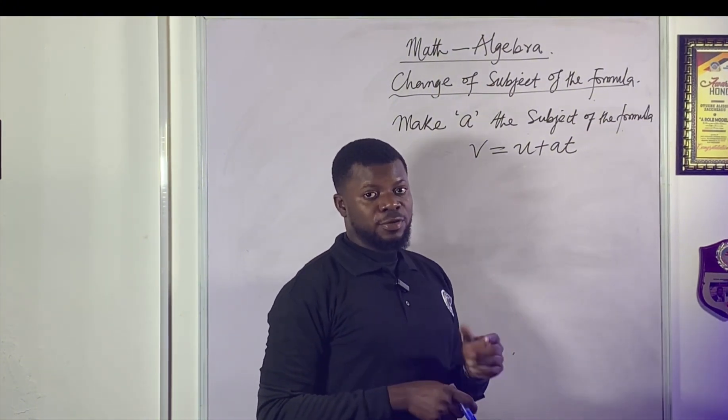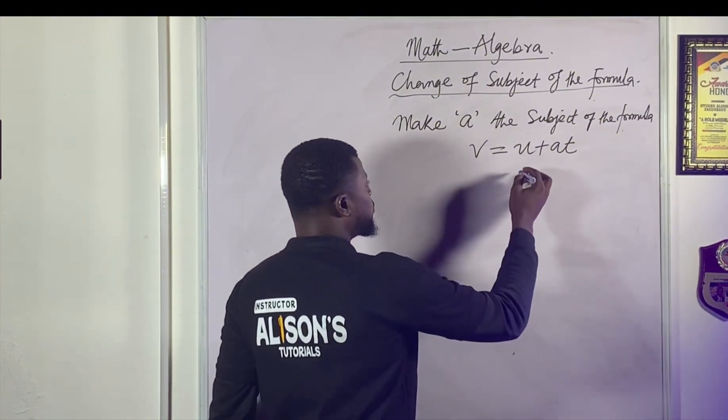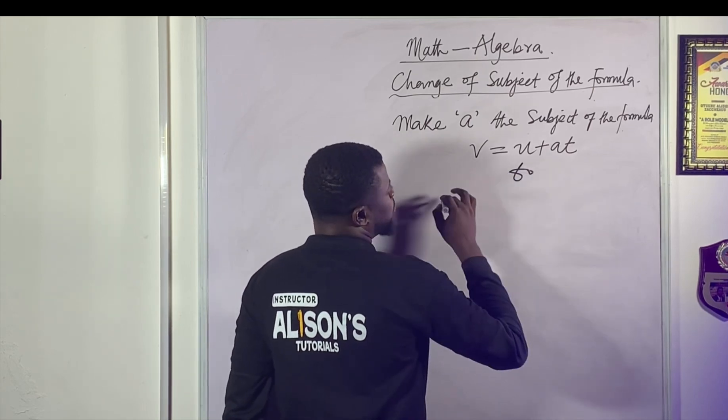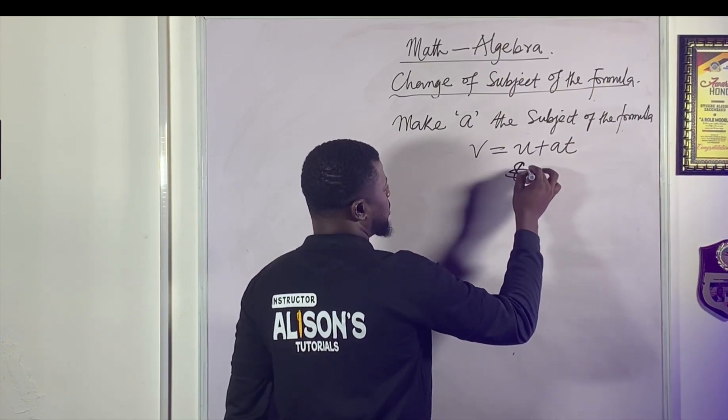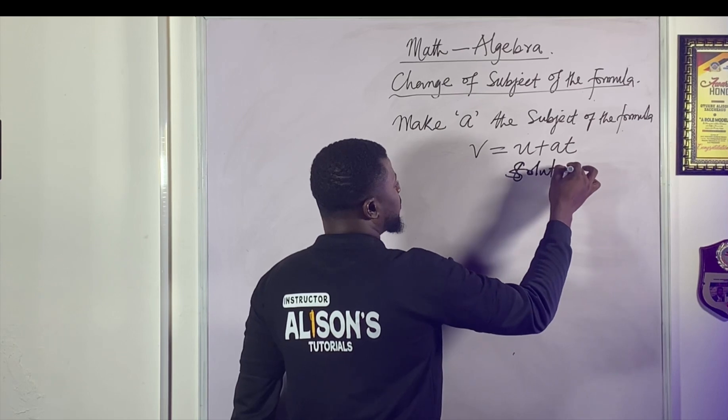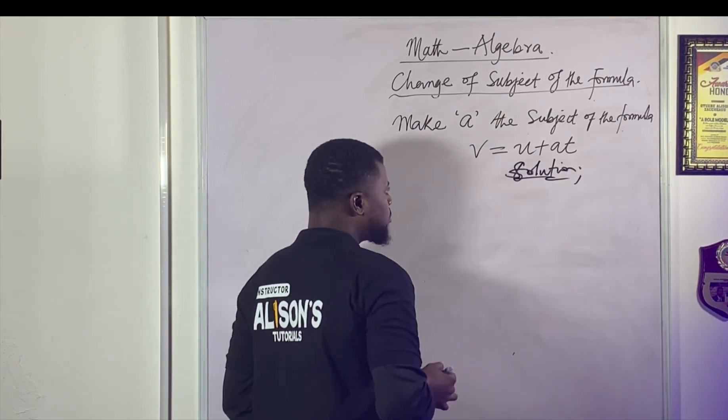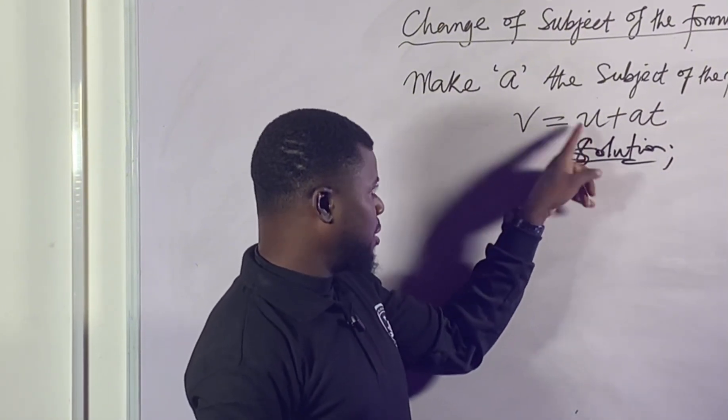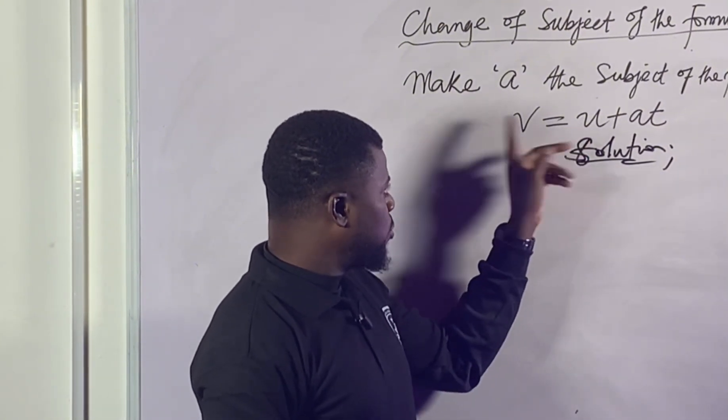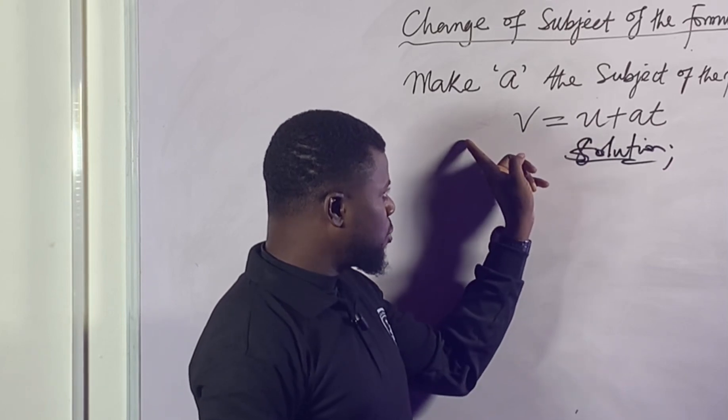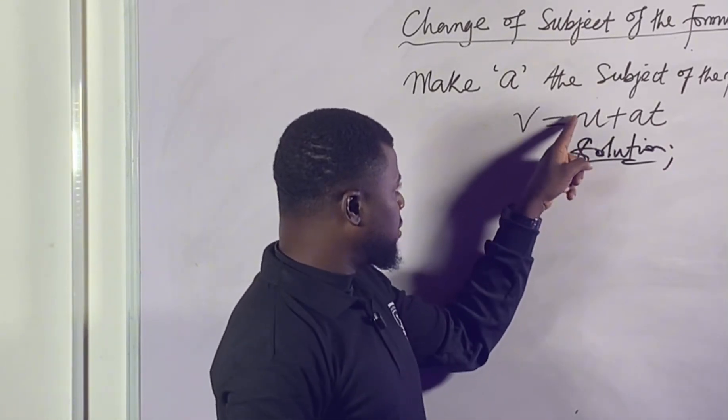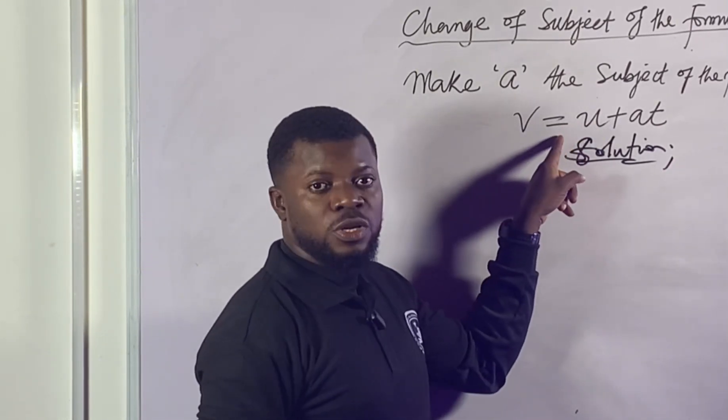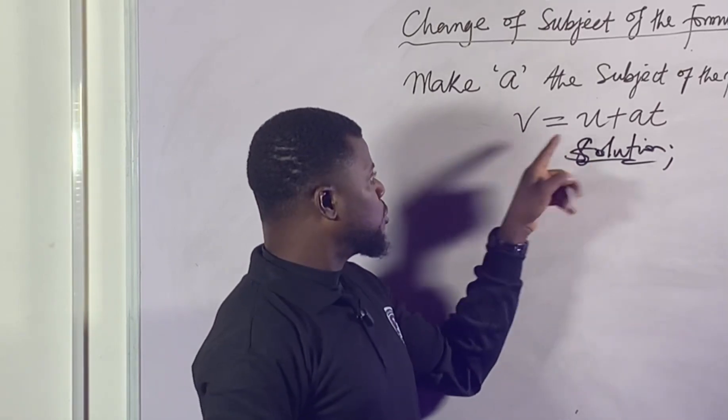To do that, the first thing we need to do - let's take this as a solution to the problem - is to make sure that we isolate this U and take it to the left. Let's move this across. Keep in mind, if a positive sign crosses the sign of equality, it changes to negative.